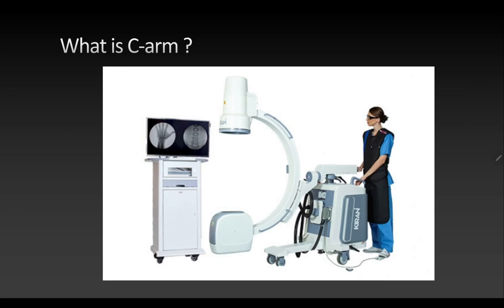The C-arm is a machine with an arm shaped like the letter C. At one end there is an x-ray generator and at the other end an x-ray detector. The advantage of the C-arm is that it emits x-rays, detects them, and projects the image onto a screen in real time. This allows surgeons to take continuous x-rays while the patient is on the table in the operating theatre. The arm can be rotated in various directions and moved to take serial x-rays of different regions.